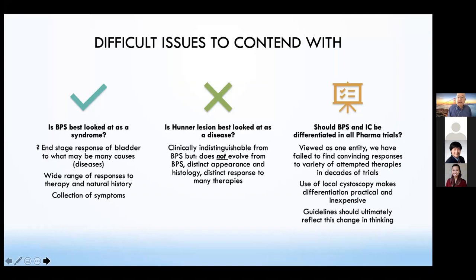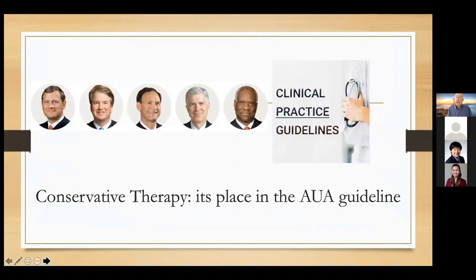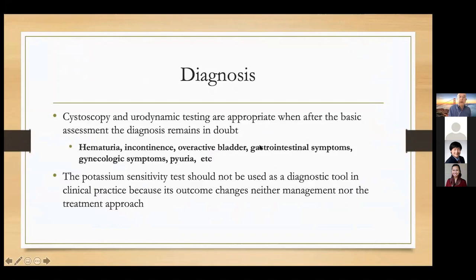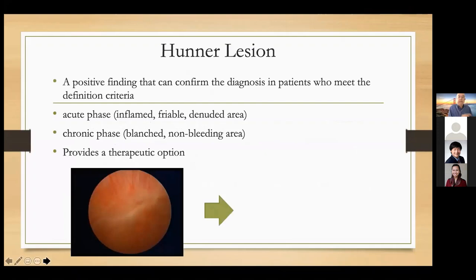Let's turn to the AUA guidelines and conservative therapy. In terms of diagnosis, cystoscopy and urodynamic testing are appropriate when after the basic assessment the diagnosis remains in doubt — hematuria, incontinence, overactive bladder, gastrointestinal symptoms, gynecologic symptoms, and pyuria would warrant doing these studies. The potassium sensitivity test should not be used as a diagnostic tool in clinical practice — that's where you instill high concentration of potassium in the bladder, and if the patient is in terrible pain it's a positive test. It can flare the symptoms, its outcome changes neither management nor treatment approach, there are a lot of false positives and false negatives. It's really a pretty worthless test — hardly anyone does it anymore.